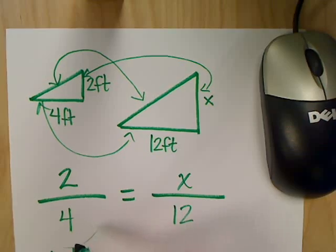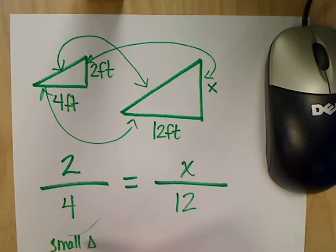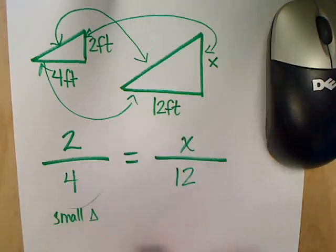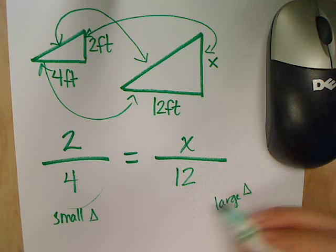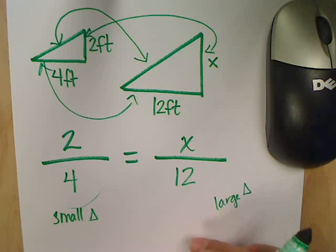So this ratio, I decided it was going to be the numbers having to do with the small triangle. And then this ratio are the numbers with the large triangle, or the big one. Okay? Now what do I do? Hold on one second.